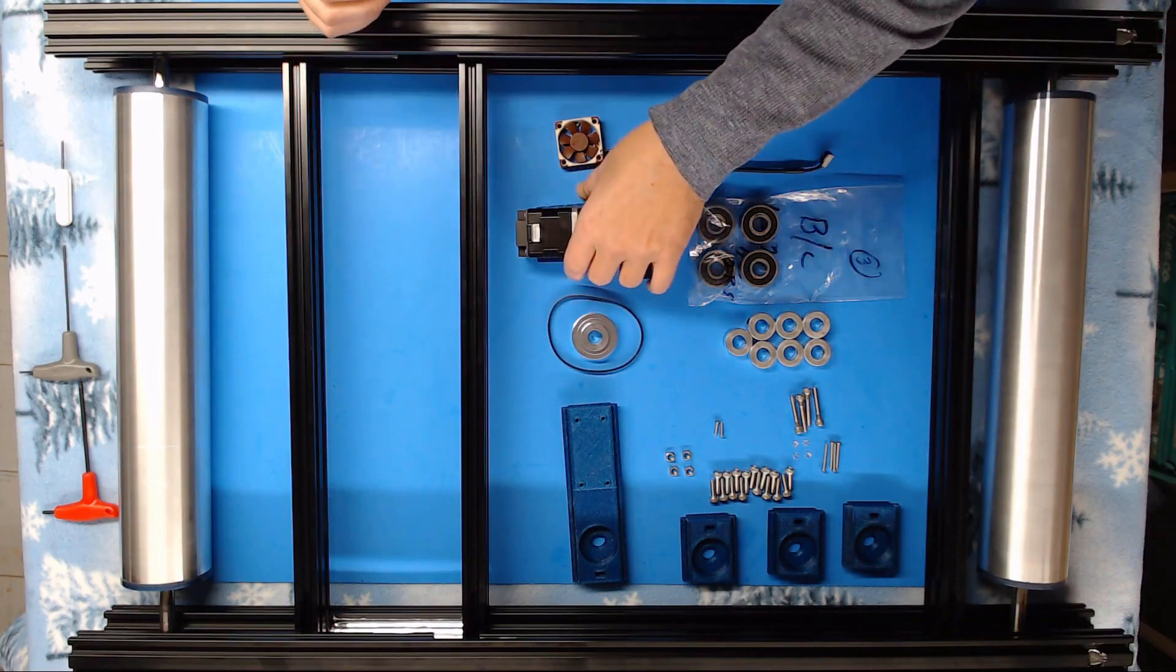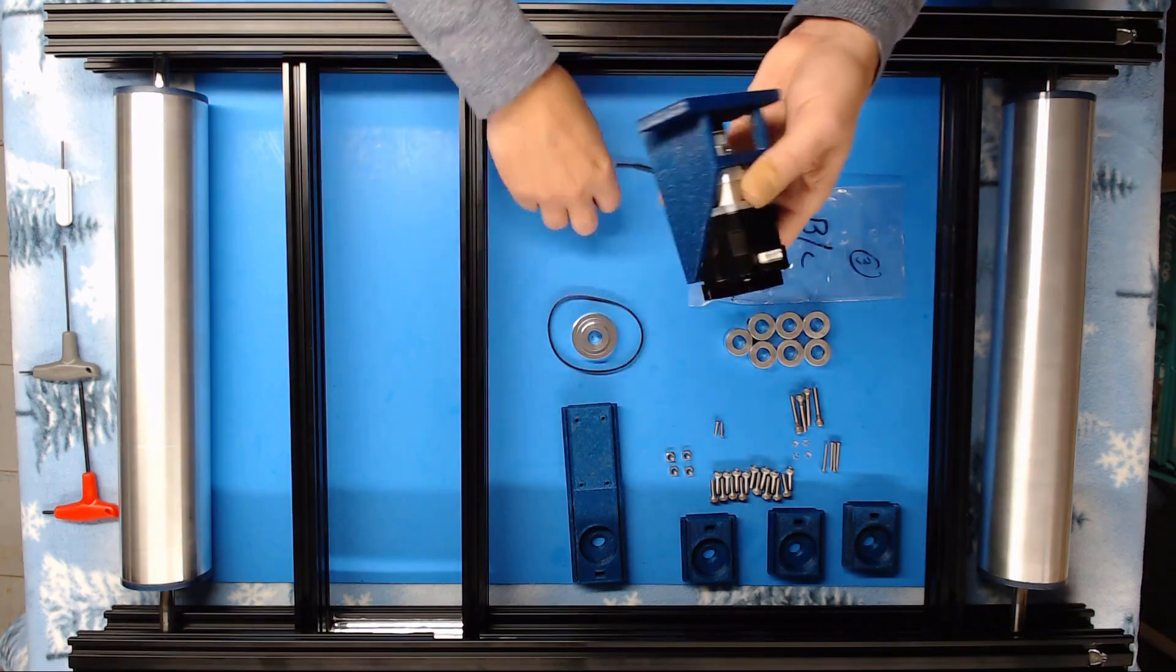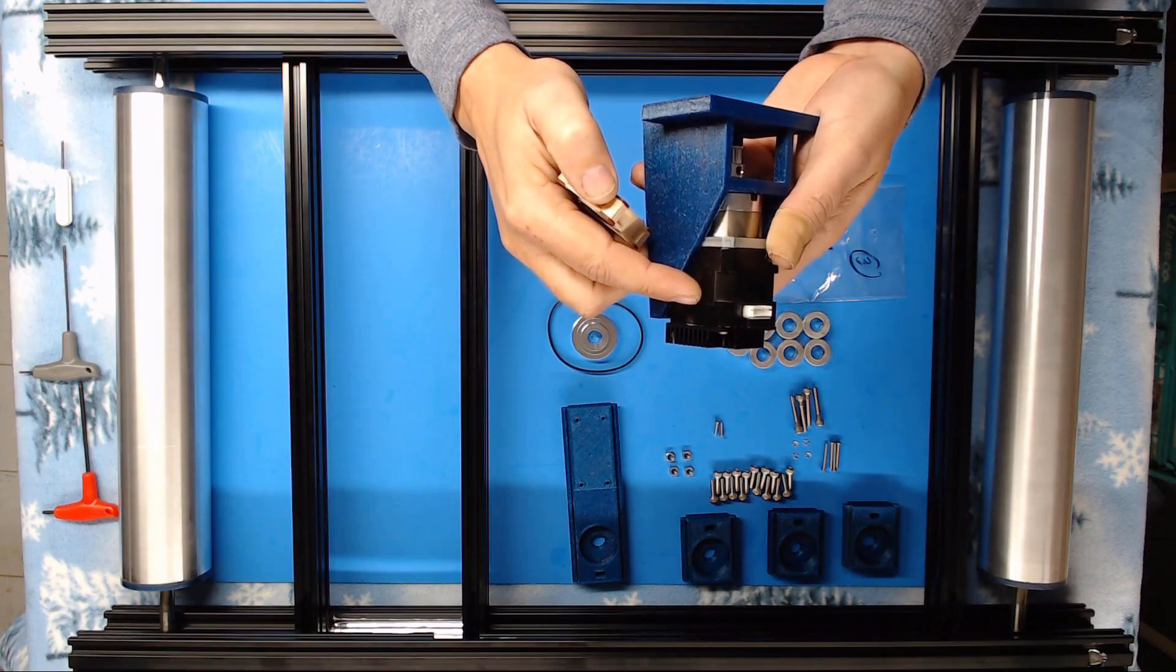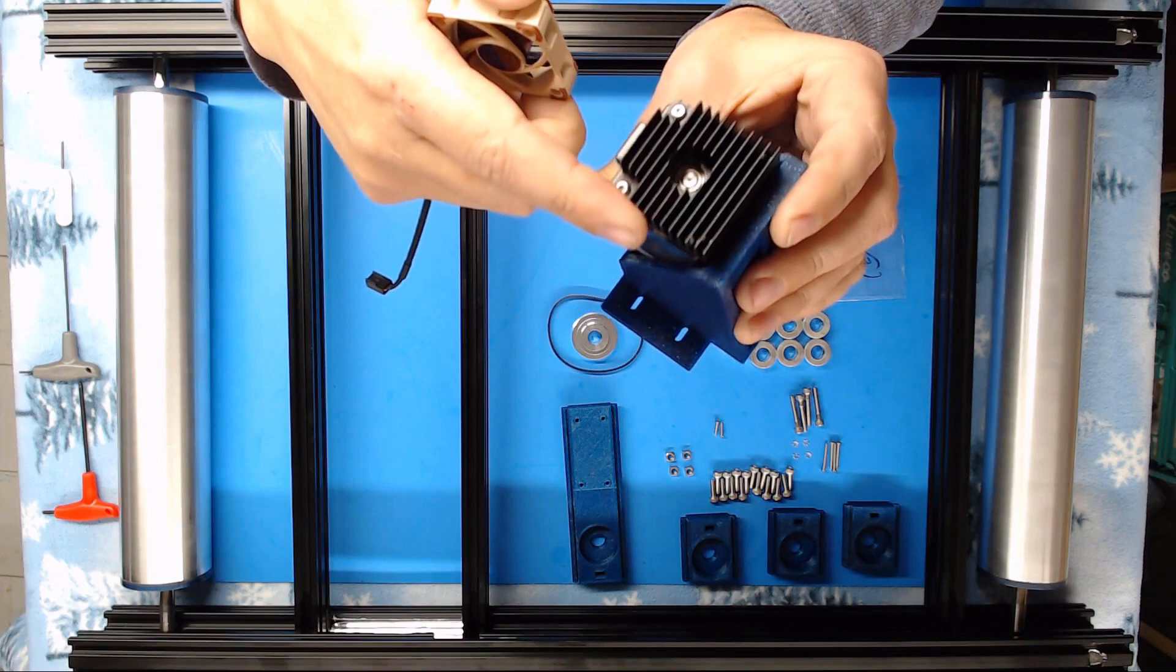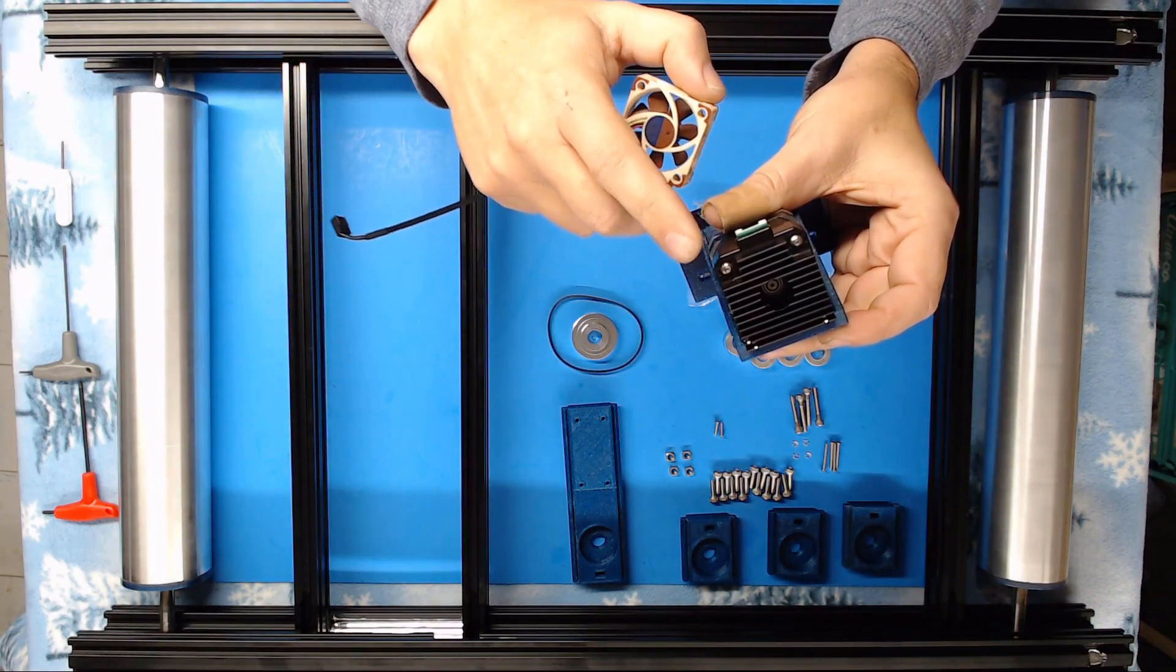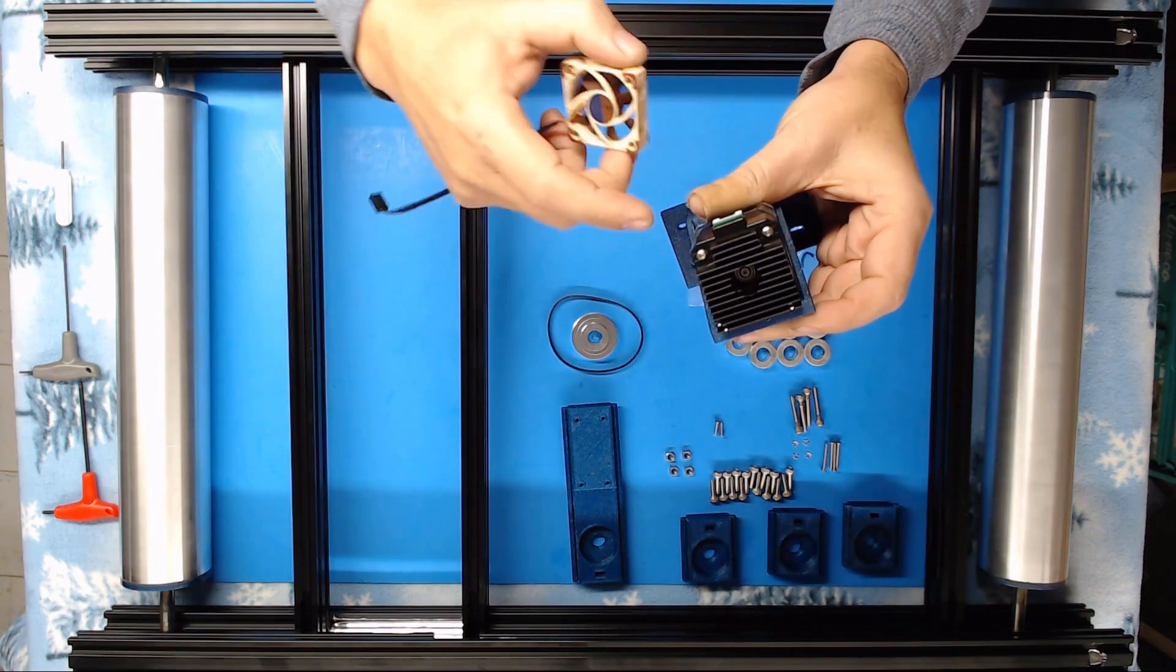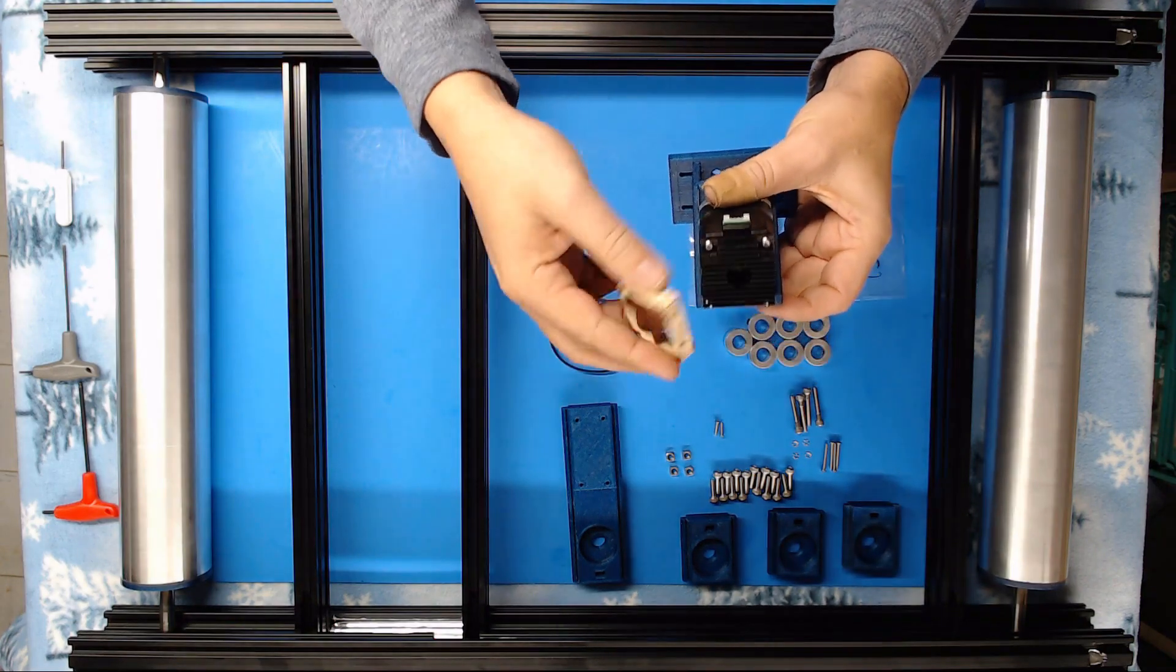Now one thing I may have mentioned earlier, we're going to mount this Noctua fan on our E3D 5 to 1 stepper. Now it did not come with this nice little heat sink on it. To put this on you need to remove these two stepper screws and replace them with two metric three by 35 millimeter screws so you can clamp this on there. What we're going to do now is we're going to mount our cooling fan onto this.